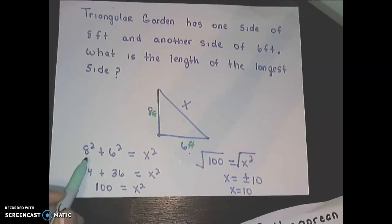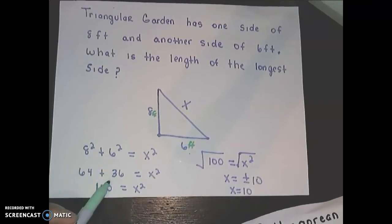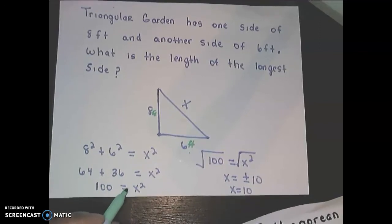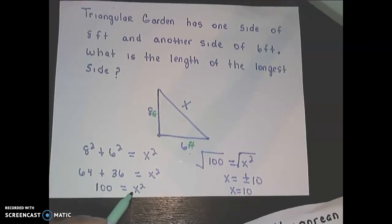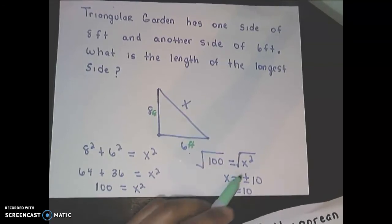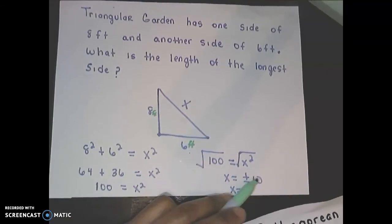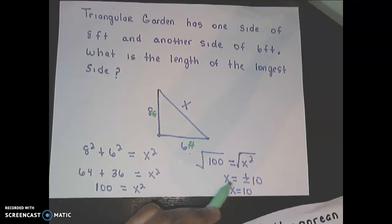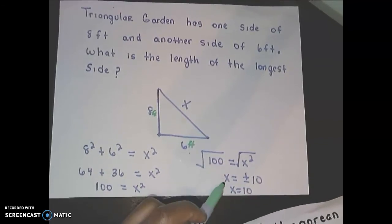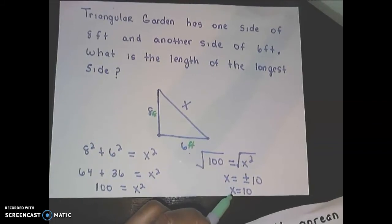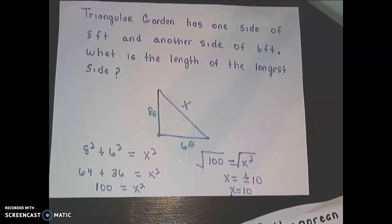8 squared is 64 and 6 squared is 36, so 64 plus 36 equals X squared, giving 100 equals X squared. Taking the square root of both sides gives plus or minus 10, but since length cannot be negative, X equals 10. The longest side is 10 feet.